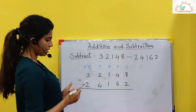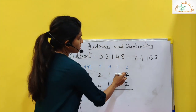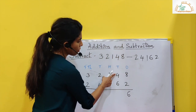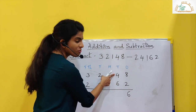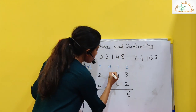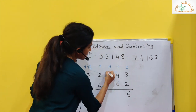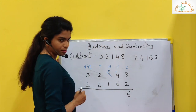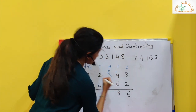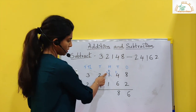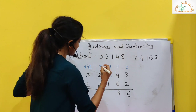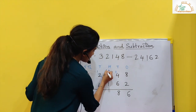We are putting the minus sign and now we are doing the subtraction. 8 minus 2 is 6. Now if you see here in the tens place, we have 4 and 6. I cannot subtract 6 from 4 because 4 is smaller than 6. So what I do here? I borrow 1 from the hundreds place — this will become 0. After borrowing, 14 minus 6 is 8.